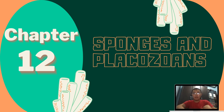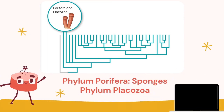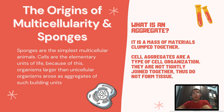Good afternoon everyone. We are group 12 and we will be talking about sponges and placozoans. First, we'll be talking about the origins of multicellularity and sponges.